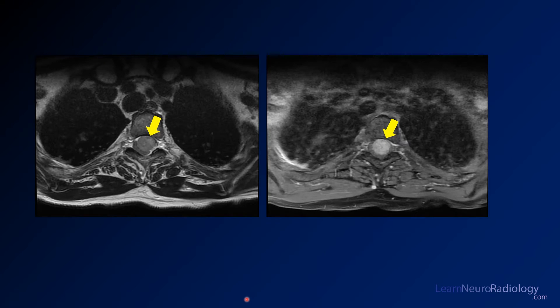On the axial images you see the same thing. There is this mass pushing the thecal sac to the side, and you can see a little bit of epidural fat there.